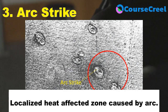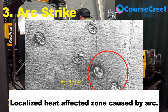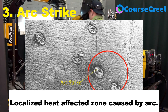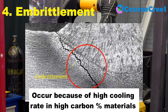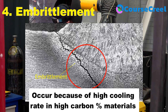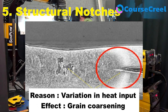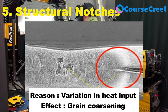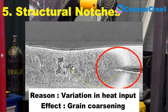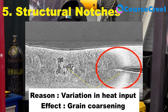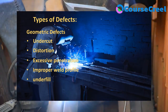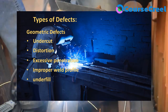Arc strike mainly represents a localized heat affected zone caused by variation of the arc during welding. Embrittlement represents the brittle nature of the weld joint and mainly occurs because of high cooling rate, especially in materials with high carbon percentage. Structural notches are defined as grain coarsening — due to variation in heat input into the material, the material experiences localized grain coarsening, which is considered structural notches.